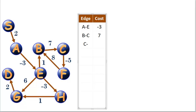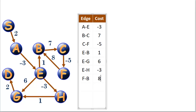All the edges out of C: C to F at a cost of negative 5. D has no outbound edges. E has an edge from E to B with a cost of 1, E to G with a cost of 6, and E to H with a cost of negative 3. F has one outbound edge: F to B with a cost of 8. G has one outbound edge: G to D with a cost of 2. And H to G with a cost of 1. And lastly, the edge from S to A with a cost of 2.